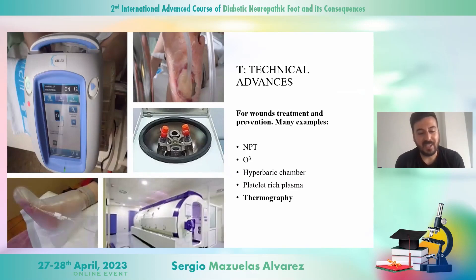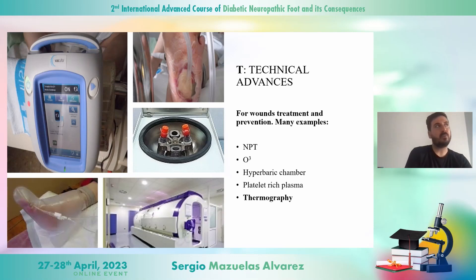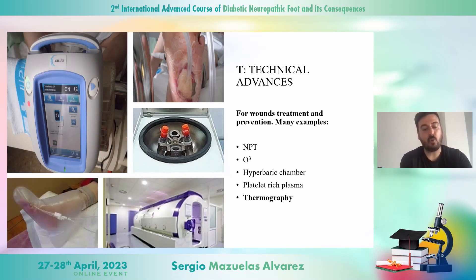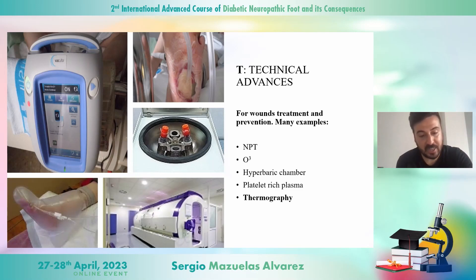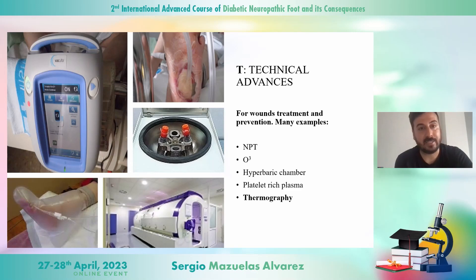Technical advances are one of the most important items in the list because there are so many types that can help us treat wounds, like negative pressure therapy, ultrasound therapy, hyperbaric chambers, and platelet-rich plasma. We also have technical advances that can be used as preventive tools, like thermography, used to detect Charcot foot, infection, or arterial disease.